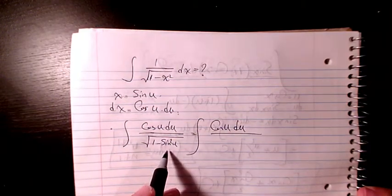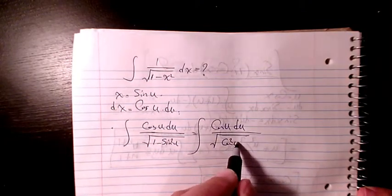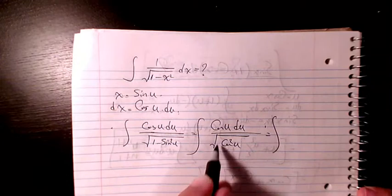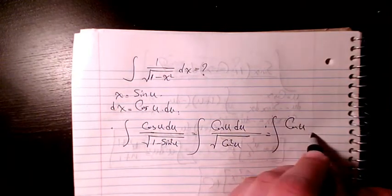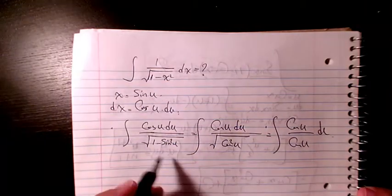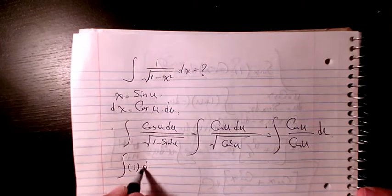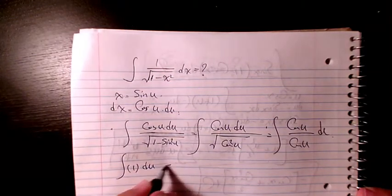1 minus sine squared is the same as cosine squared, as you know. And then the square root of cosine squared is just cosine u, so these two cancel out and it will have only 1 du. So the